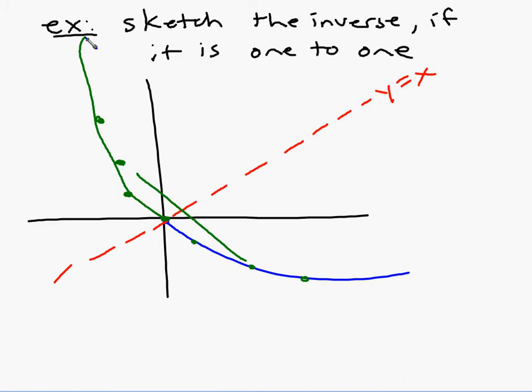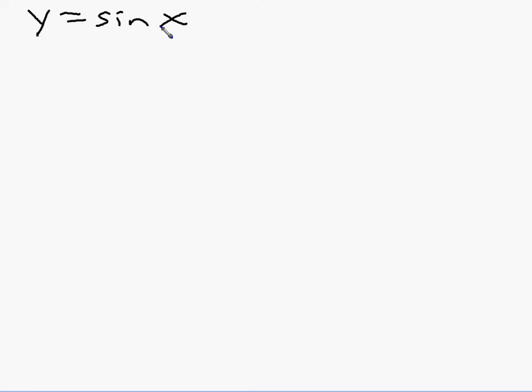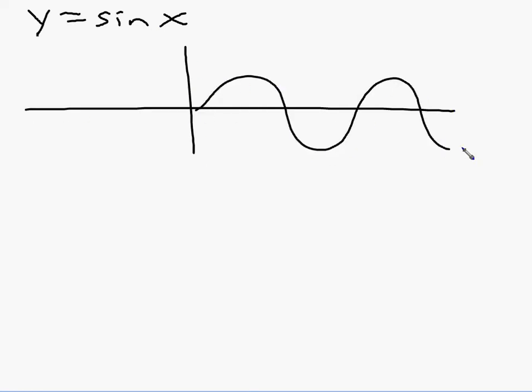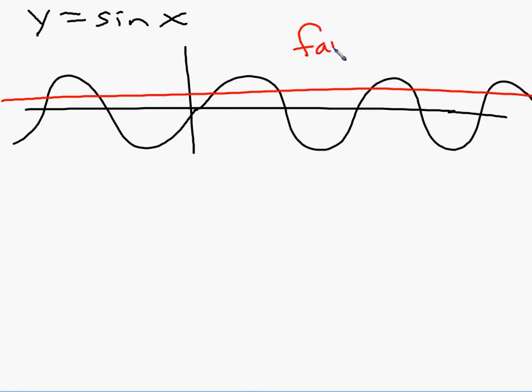Now let's see how this relates to sine and cosine. If we look at the graph y equals sine of x, it's a periodic function that keeps repeating over and over. Does it pass the horizontal line test? Absolutely not — it fails the horizontal line test miserably.